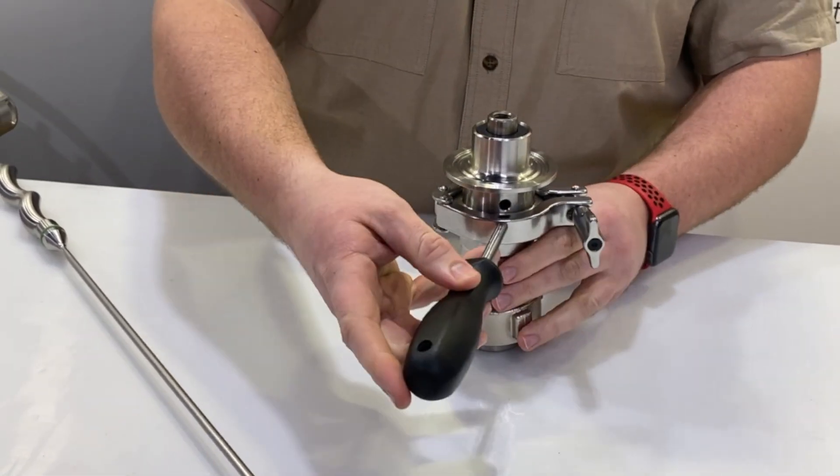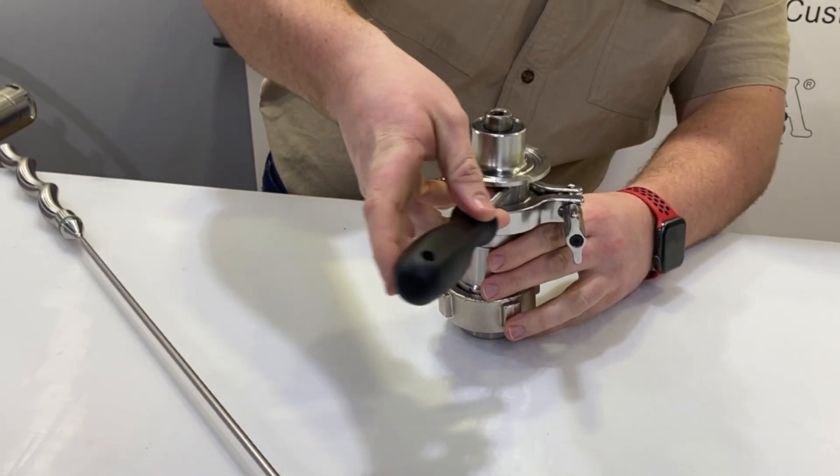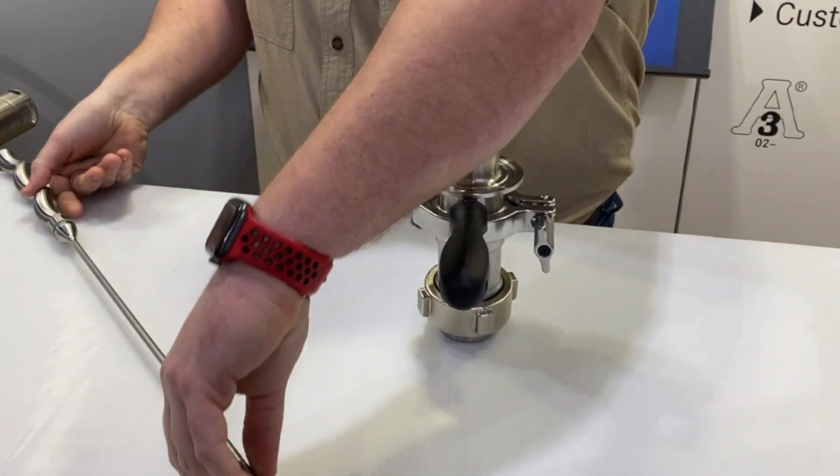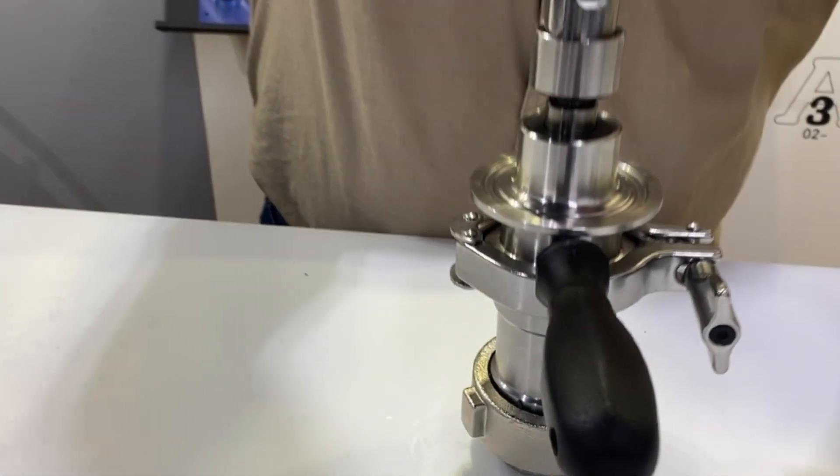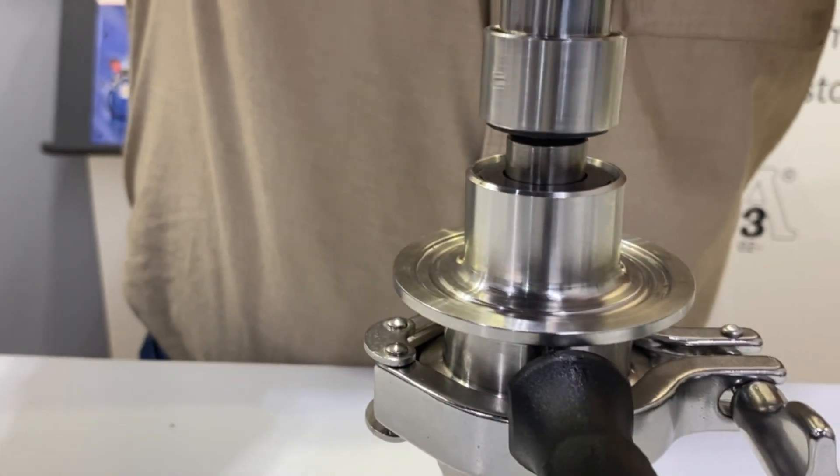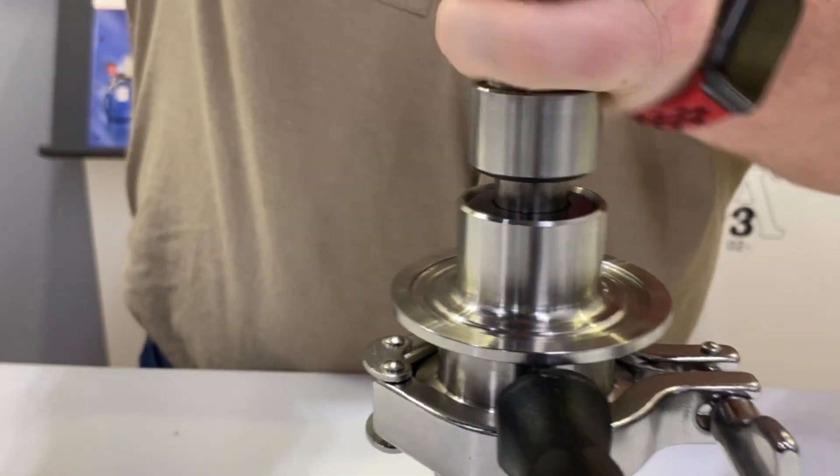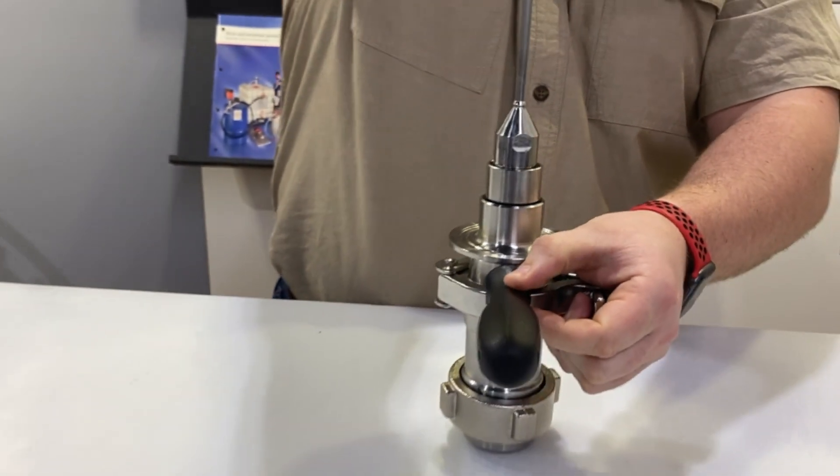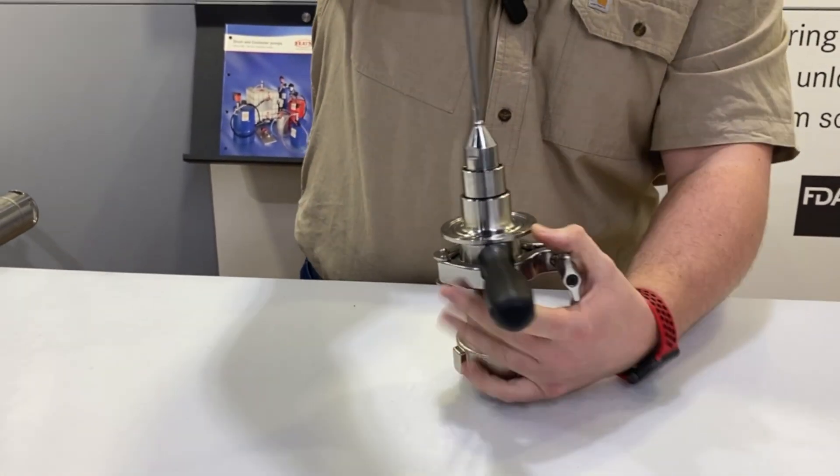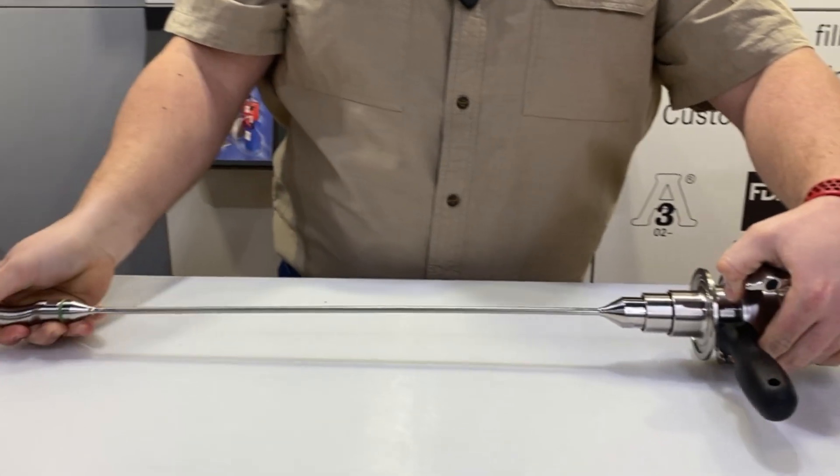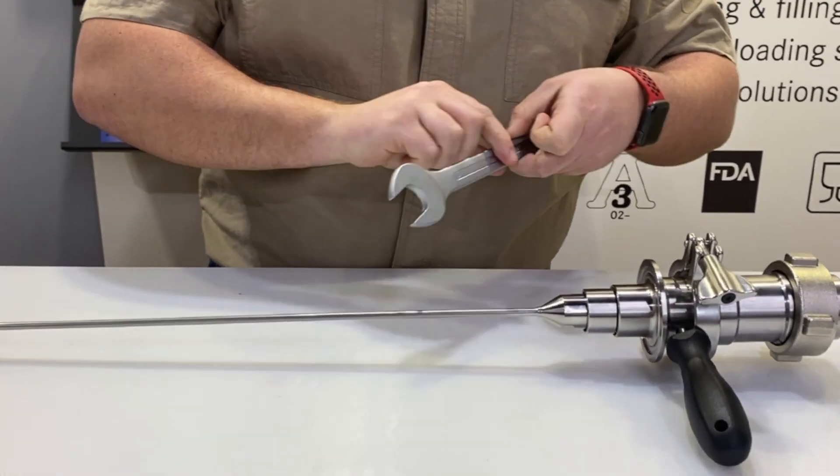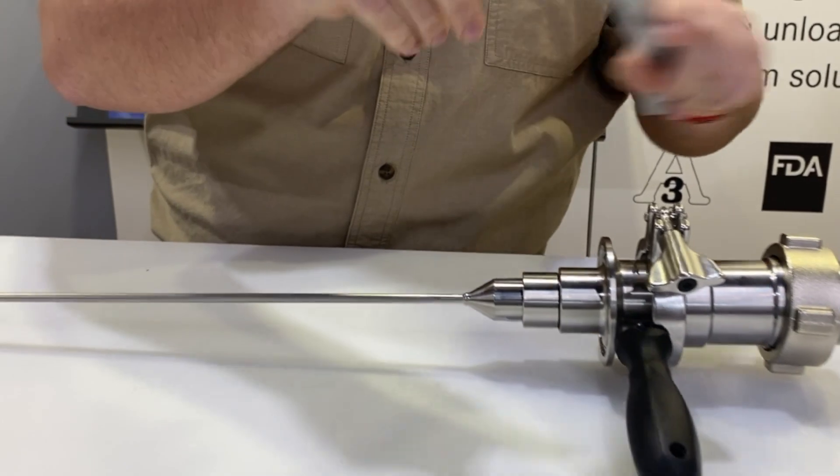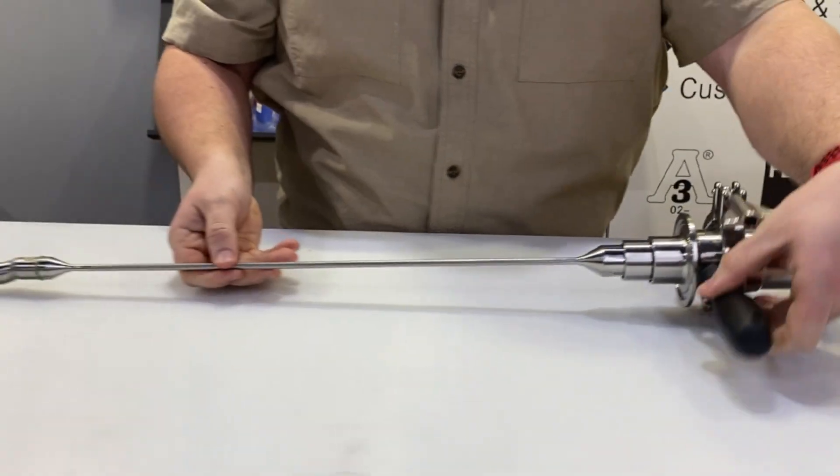Then insert our staking tool. We can grab the shaft assembly and thread that right on. Using our 24mm wrench again, just tighten that up. At this point you can remove the staking tool.